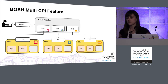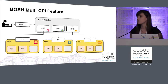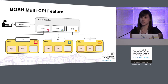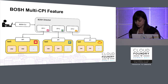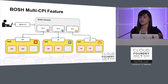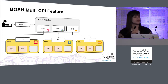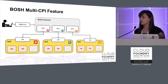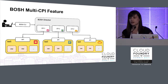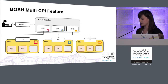BOSH fortunately already had the concept of native built-in availability zones. We thought: why shouldn't we apply this concept to the infrastructure too? And that's what we did. The BOSH multi-CPI feature was developed by Swisscom in collaboration with Pivotal to allow a BOSH director to handle multiple CPI configurations at the same time. It not only allows us to configure multiple availability zones for one infrastructure provider, it allows us to have multiple infrastructure providers and deploy software across them.